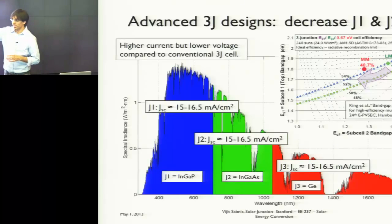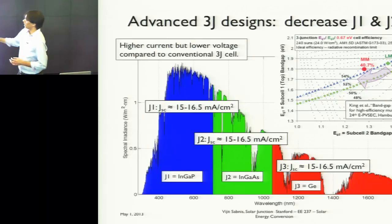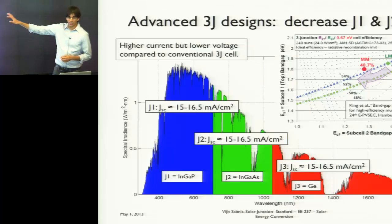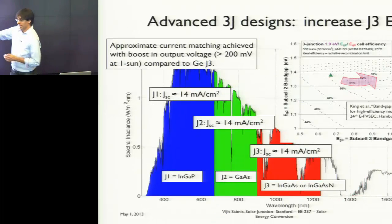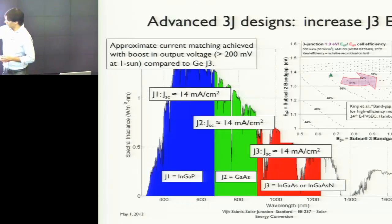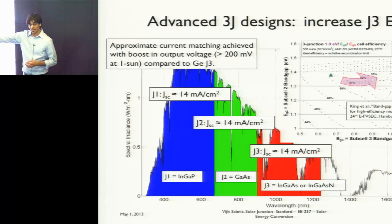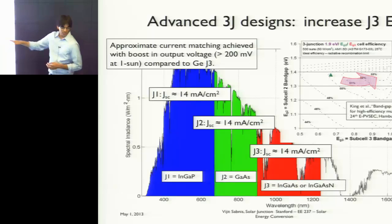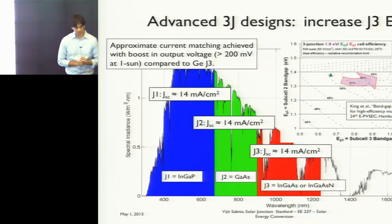One way to improve efficiency is to decrease the band gap of the top two junctions — changing the band gap of InGaP and InGaAs to achieve something more current-matched between each of the three junctions, giving substantially higher theoretical efficiencies. Another way is to replace germanium with another compound semiconductor — either indium gallium arsenide or indium gallium arsenide nitride — which has a higher band gap and gives better current matching. That's what we've done at Solar Junction to achieve 44% compared to about 40% today.